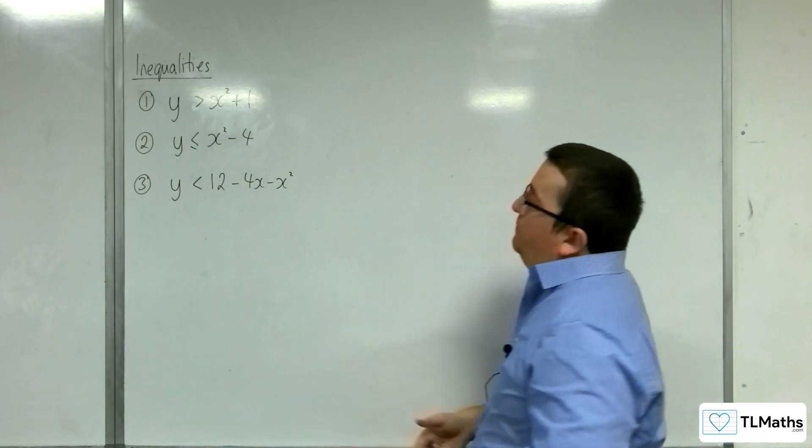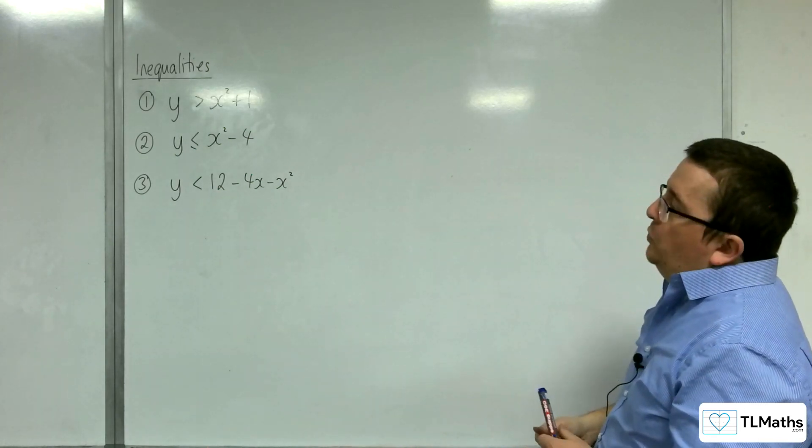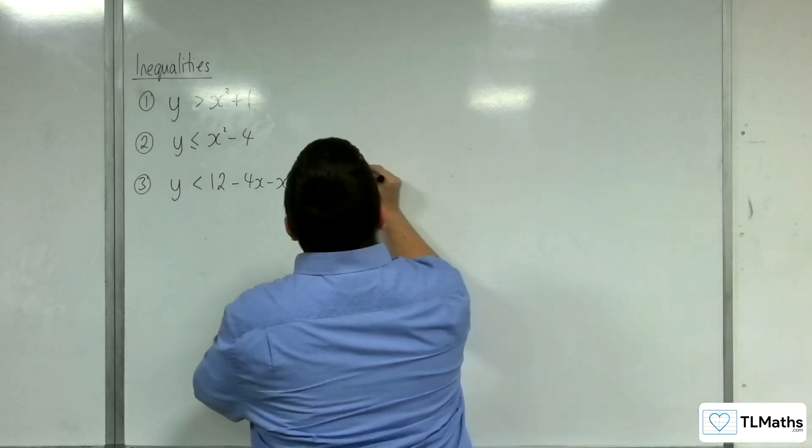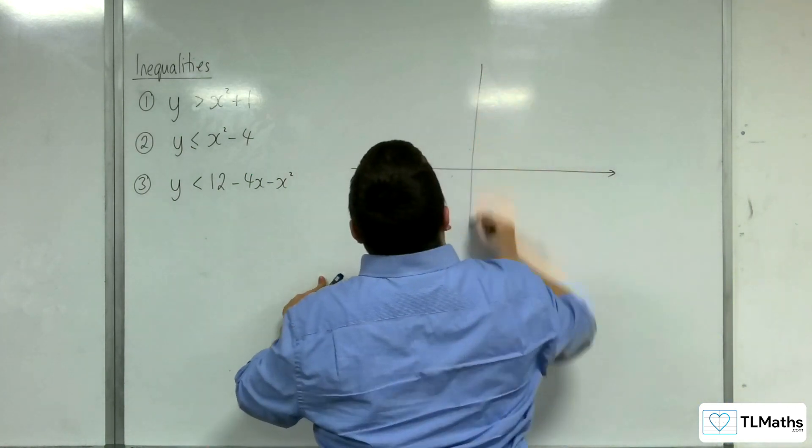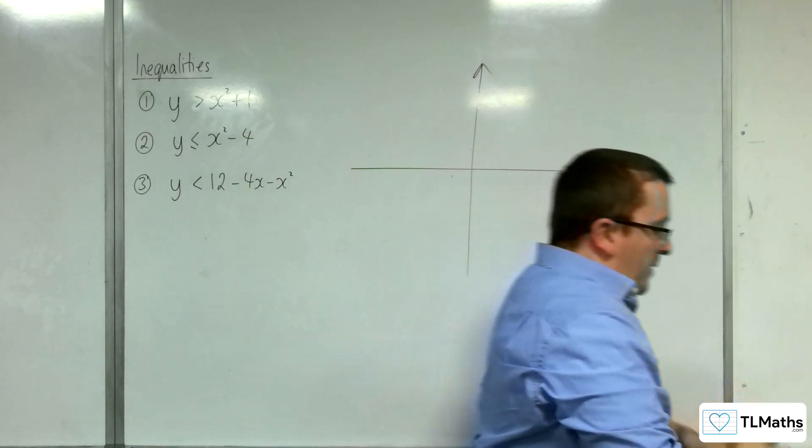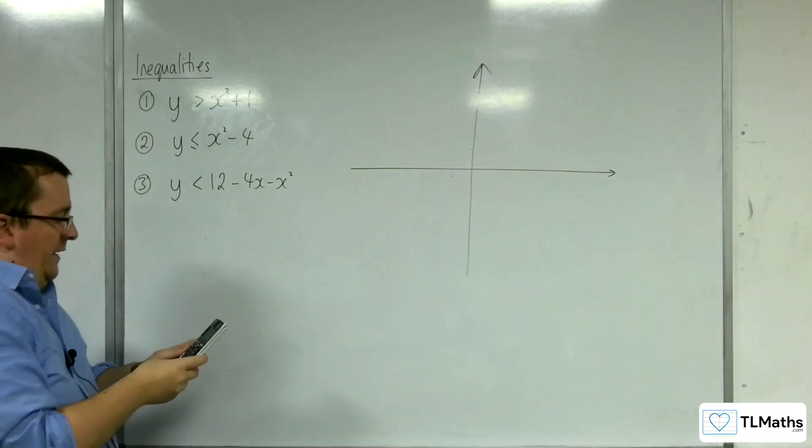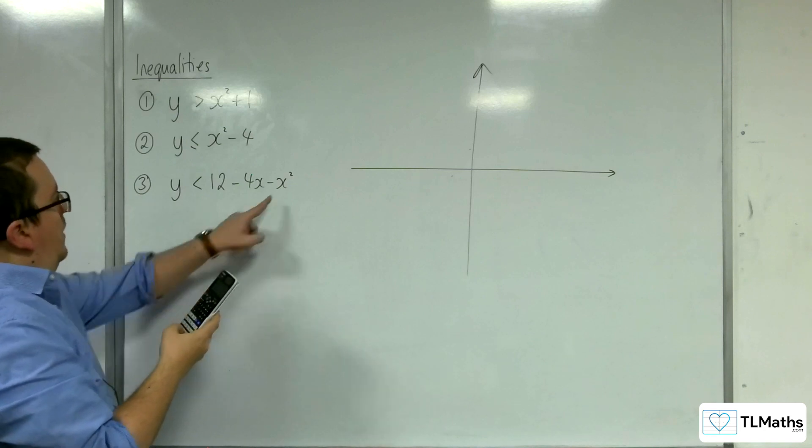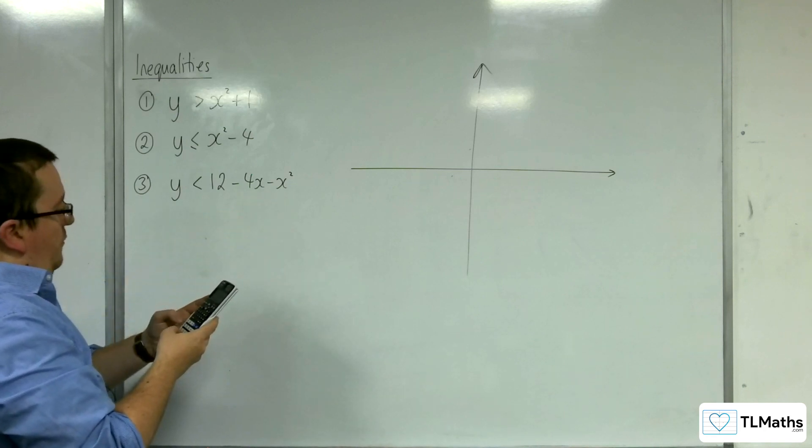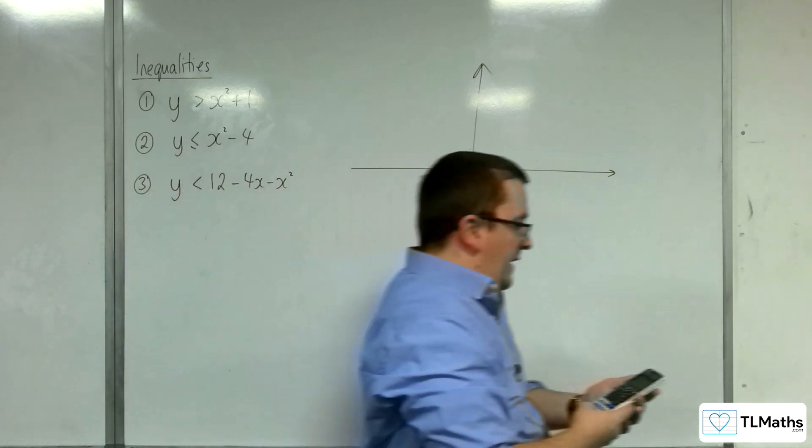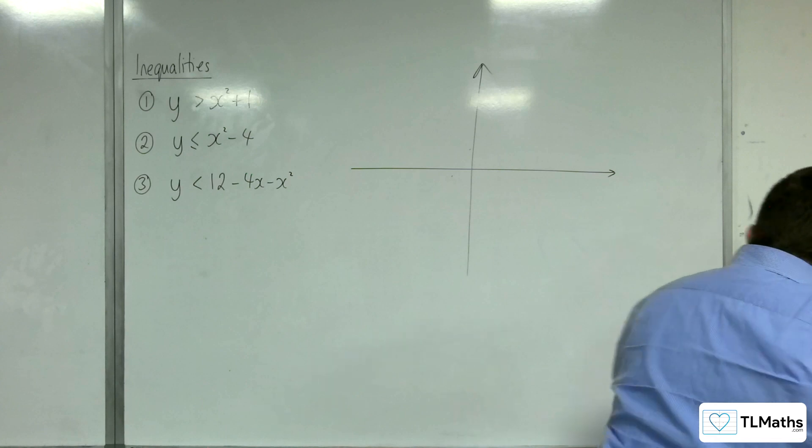Okay. Number three. Y is less than 12 take away four x take away x squared. So, I'm going to pop that into my quadratic solver. Find out where it crosses the x-axis. So, we've got minus one x squared take away four x plus 12.